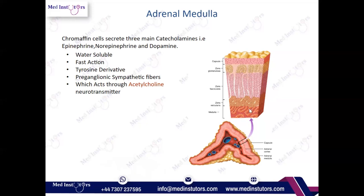Chromaffin cells secrete catecholamines: epinephrine, norepinephrine, and dopamine. These catecholamines are water-soluble and derived from tyrosine — compare this to adrenal cortex hormones, which are synthesized from cholesterol. The chromaffin cells or adrenal medulla are innervated by preganglionic sympathetic fibers, which act through the neurotransmitter acetylcholine. In an exam, if they ask which neurotransmitter is responsible for catecholamine production in the adrenal medulla, the answer is acetylcholine — this is high yield.